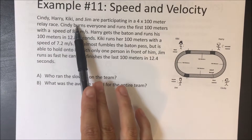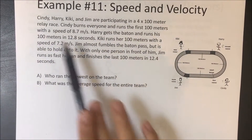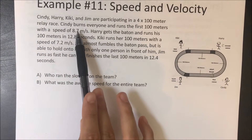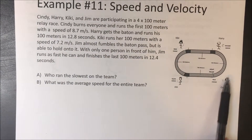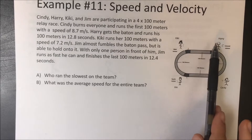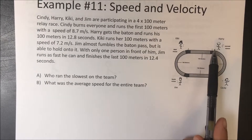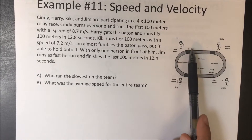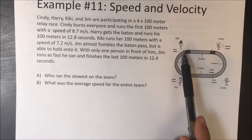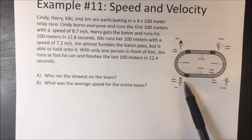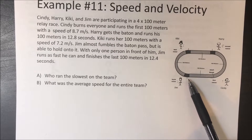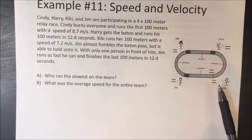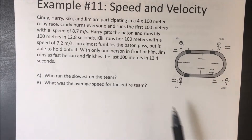Cindy, Harry, Kiki, and Jim are participating in a 4x100 relay race. Cindy burns everyone and runs the first 100 meters with a speed of 8.7 meters per second. Harry gets the baton and runs his 100 meters in 12.8 seconds. Kiki runs her 100 meters with a speed of 7.2 meters per second. Jim almost fumbles the baton but holds on and finishes the last 100 meters in 12.4 seconds. Who is the slowest on the team?